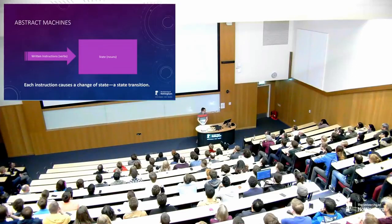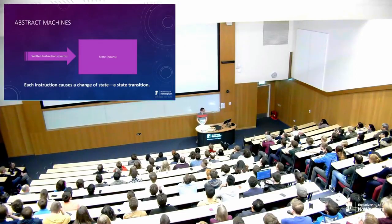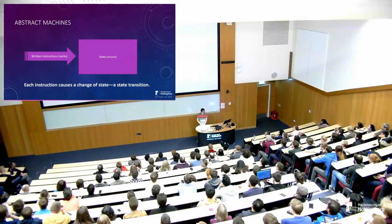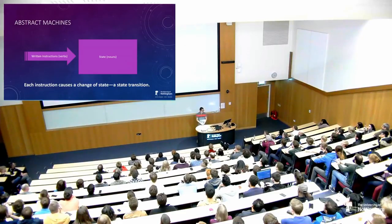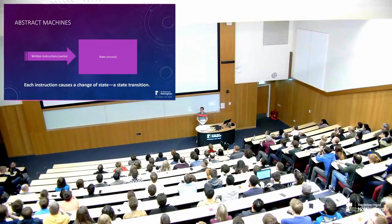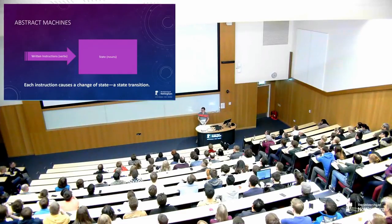We can think of an abstract machine as having state, and then instructions — the machine executing these instructions so as to change the state. We're not specifying the mechanism of how these instructions are loaded or encoded or anything like that, except that fundamentally the machine has state and a way to change the state in a well-defined way.